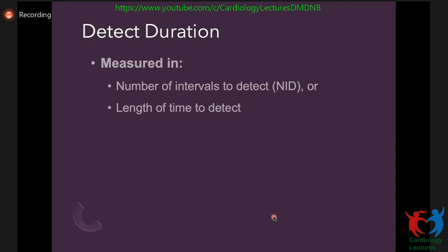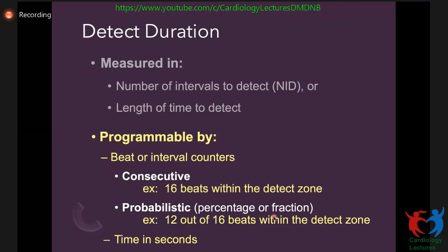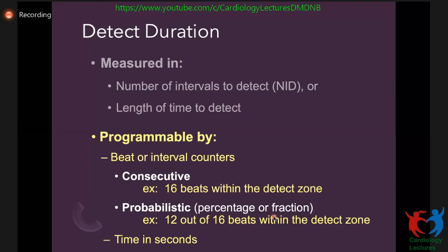The detection count can be programmed as consecutive beats — for example, 16 fast beats in a row — which then meets the detection criteria for VT or VF. Alternatively, it can be probabilistic: for instance, if 12 out of 16 beats meet the fast rate criteria, the device classifies it as VT or VF. You can program ratios such as 8 of 10, 12 of 16, or 10 of 20, depending on what you set.